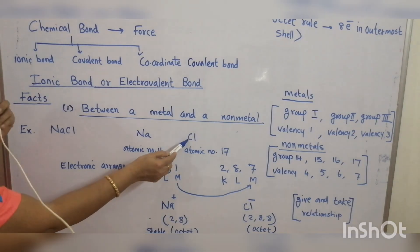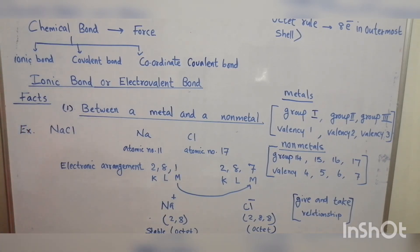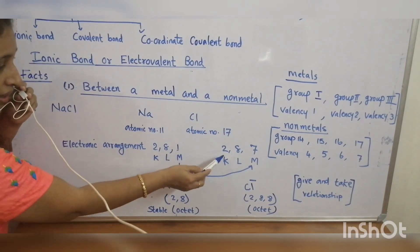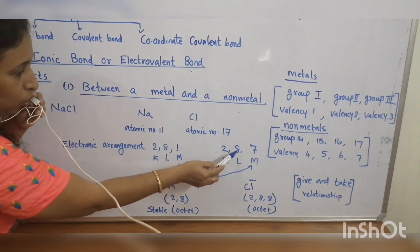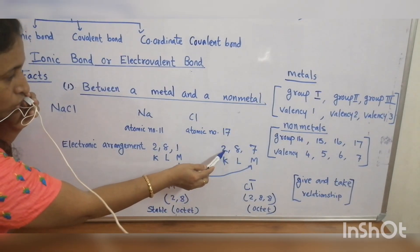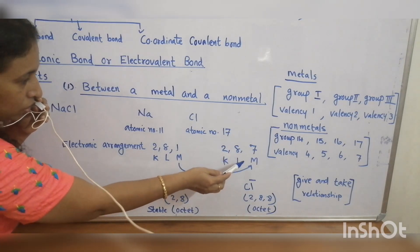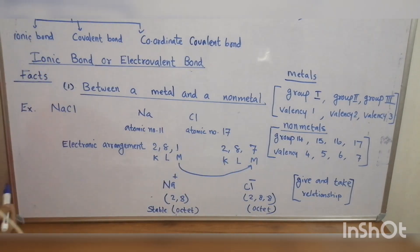And chlorine has atomic number 17. Chlorine is a group 17 element. The electronic configuration is 2, 8, 7 — K shell has 2 electrons, L shell has 8 electrons and M shell has 7 electrons.